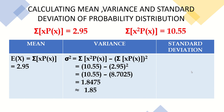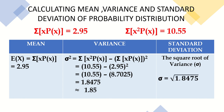The standard deviation is the square root of the variance. The computed variance is 1.8475, so the standard deviation equals √1.8475, which is approximately 1.3592277, or approximately 1.36. So that is how to find the mean, variance, and standard deviation of a probability distribution.